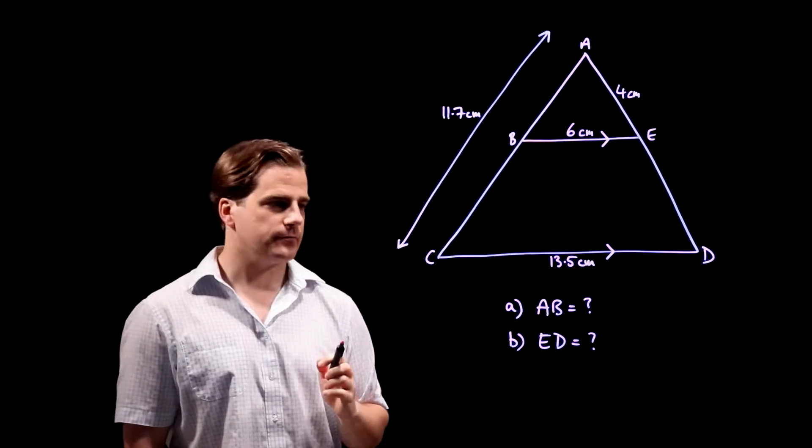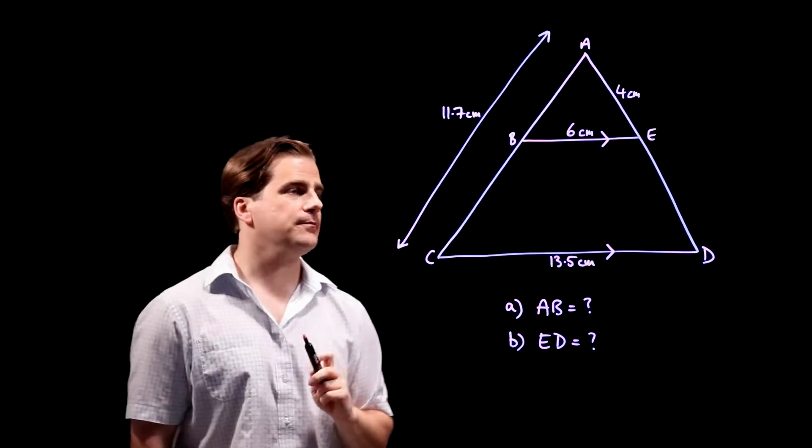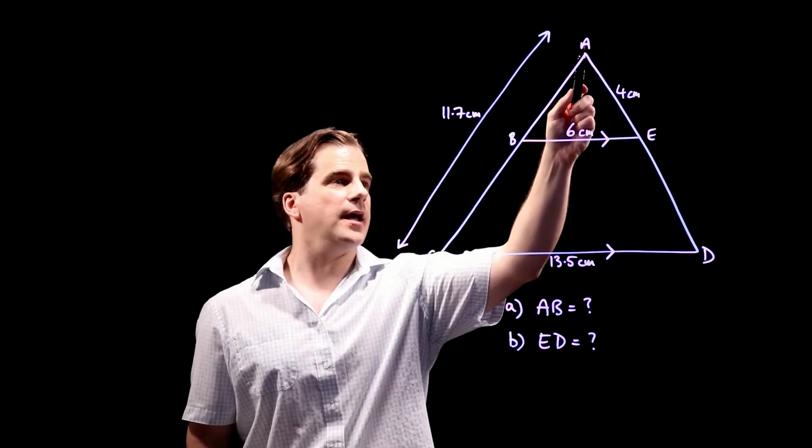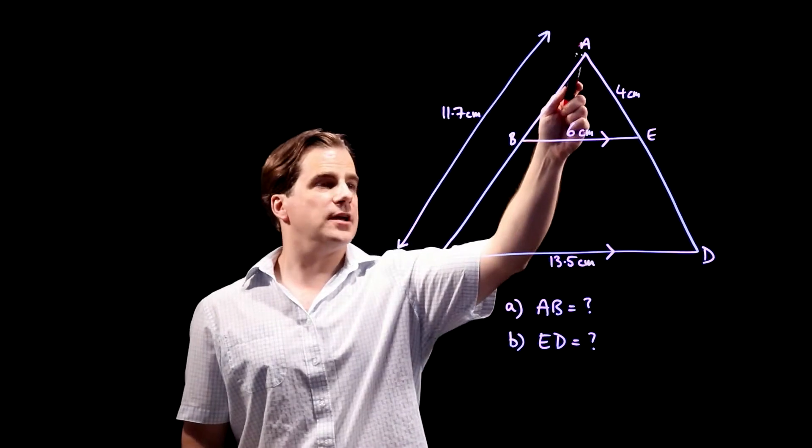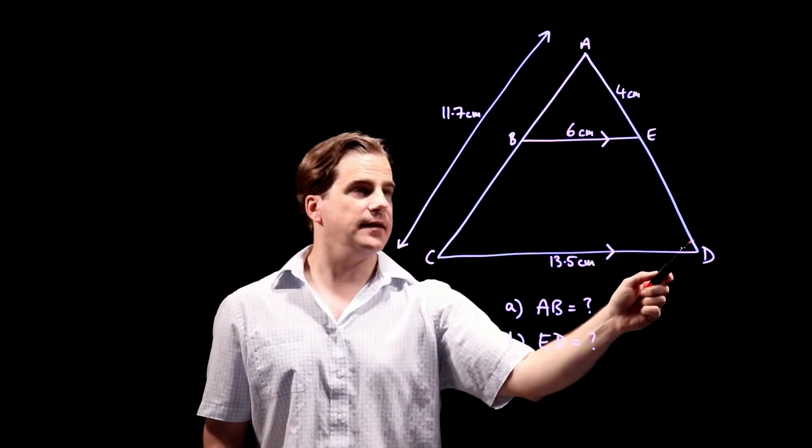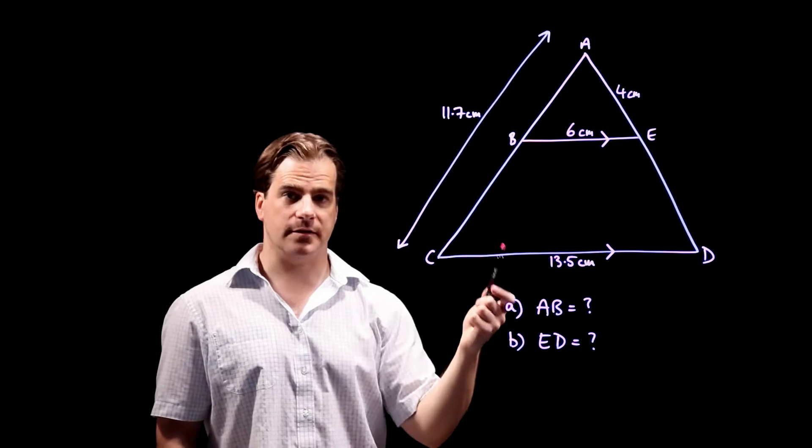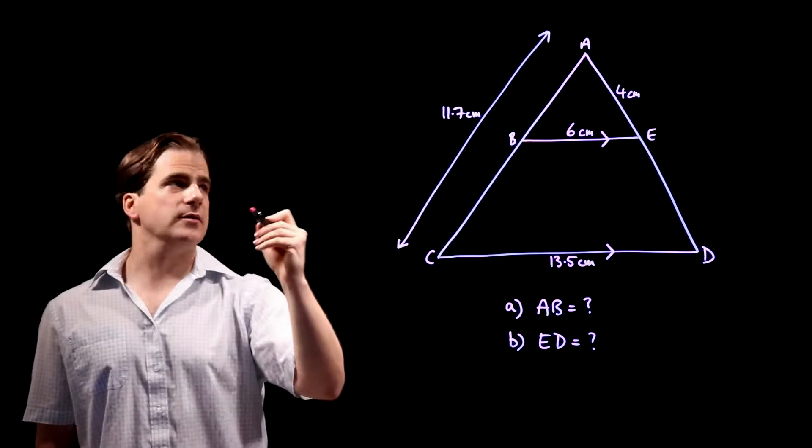So, to find AB, we're going to use the fact that the ratio of AB to BE is the same as the ratio of AC to CD because the two triangles are similar. So, let's put that in an equation.